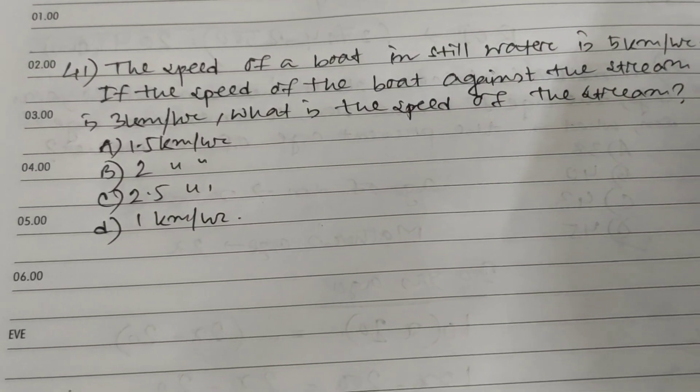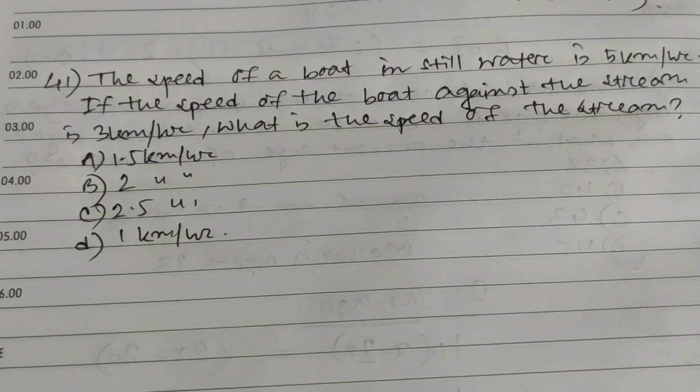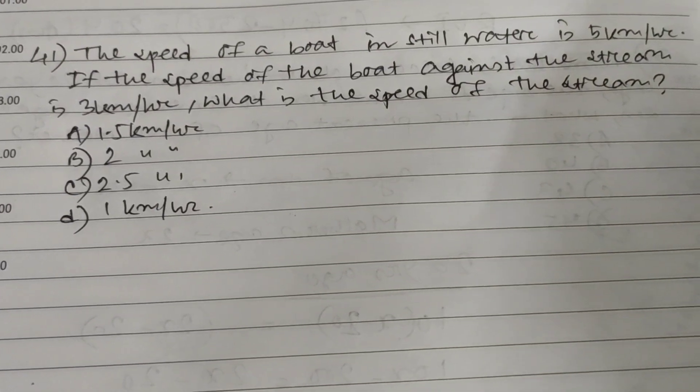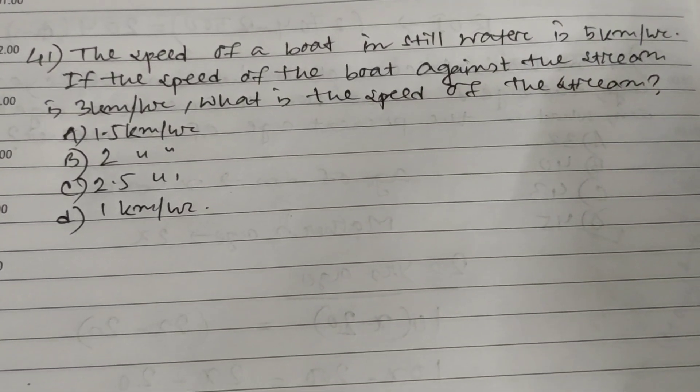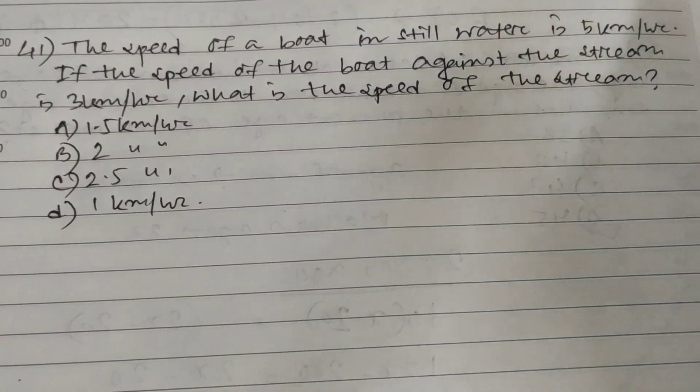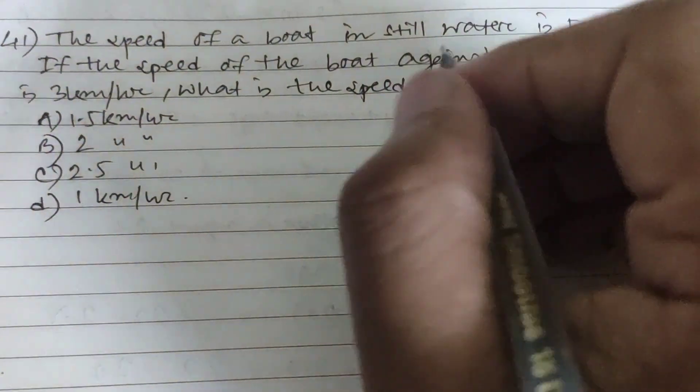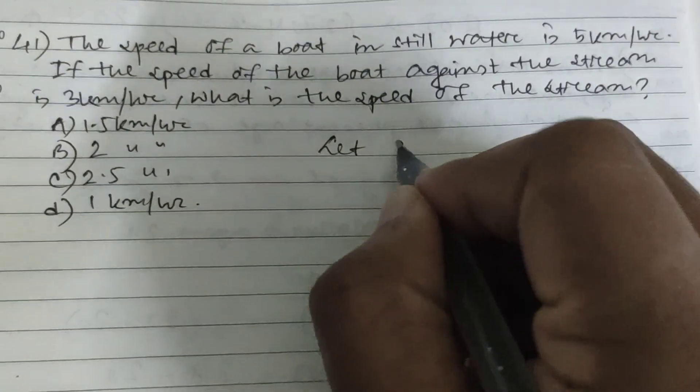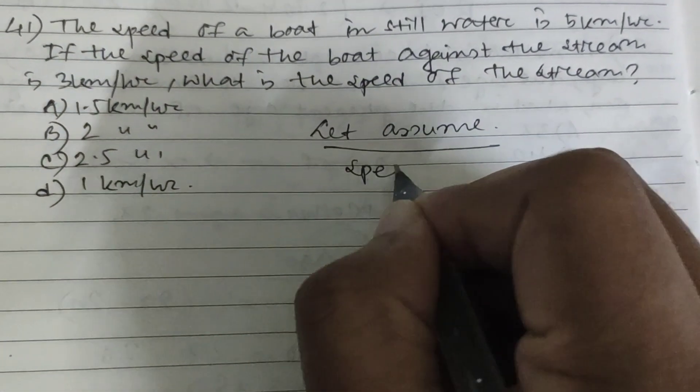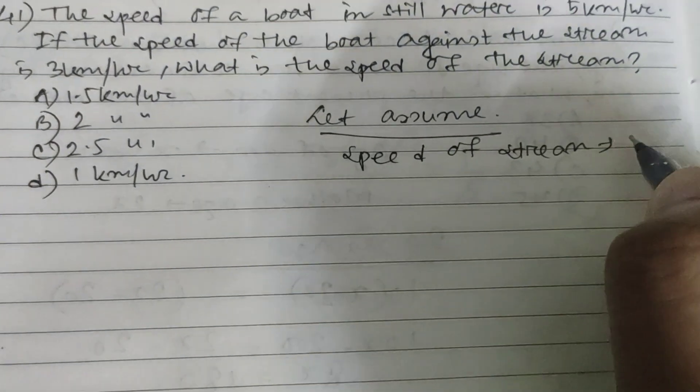Hi friends and students, this is question number 41. The speed of a boat in still water is 5 kilometer per hour. If the speed of the boat against the stream is 3 kilometer per hour, then what is the speed of the stream?